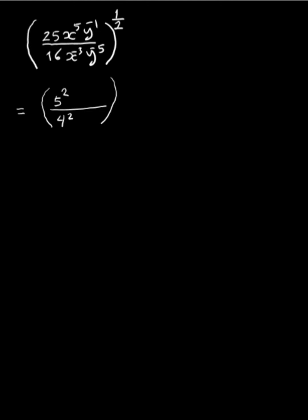Here we have 8 to the power 5 and 8 to the power negative 3. We can combine them by moving 8 to the power negative 3 up to the numerator by changing the sign of the exponent, so it becomes 8 to the power 3. Multiplying 8 to the power 5 by 8 to the power 3 gives 8 to the power 8, by the product rule with the same base.